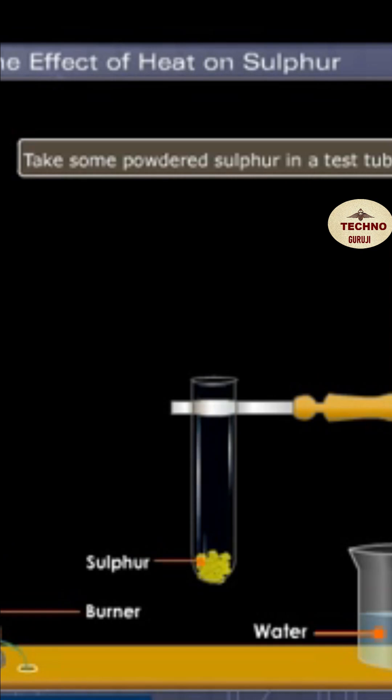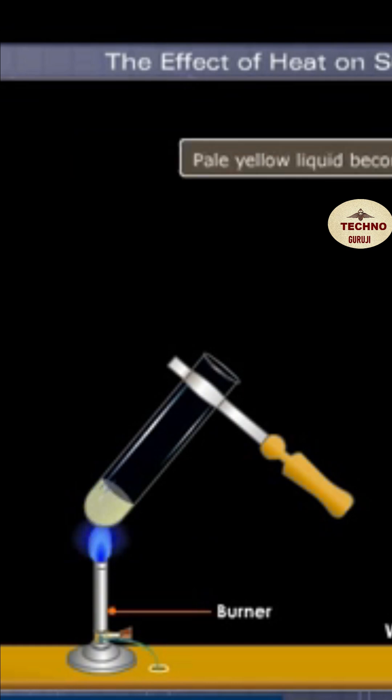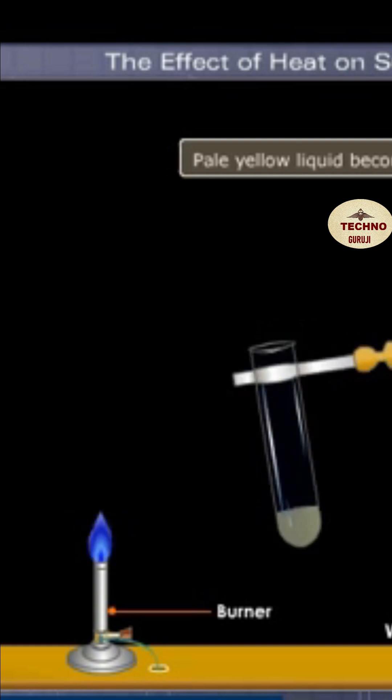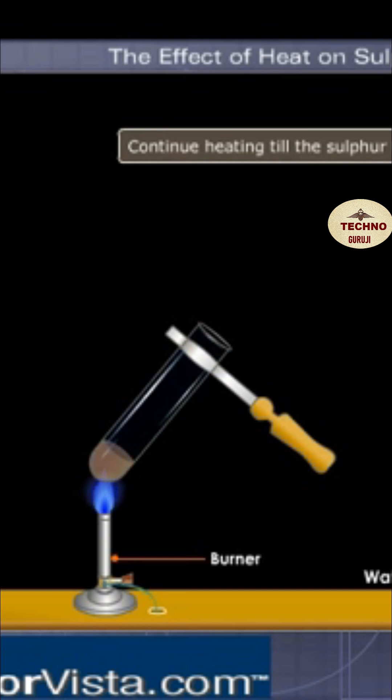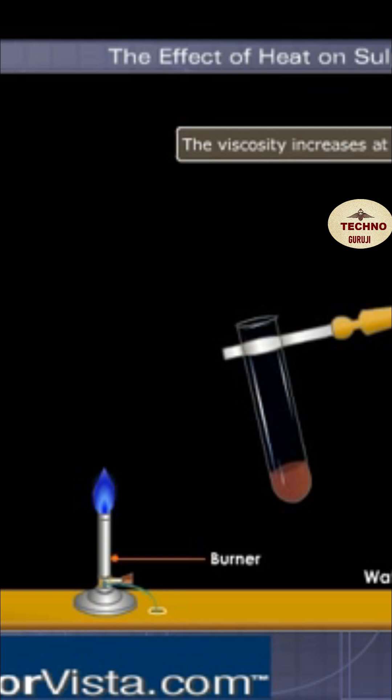Take some powdered sulfur in a test tube and heat the sulfur till it melts to form a pale yellow liquid. Observe that the pale yellow liquid becomes viscous on further heating. Continue heating till the sulfur turns orange-red; the viscosity increases at this stage.